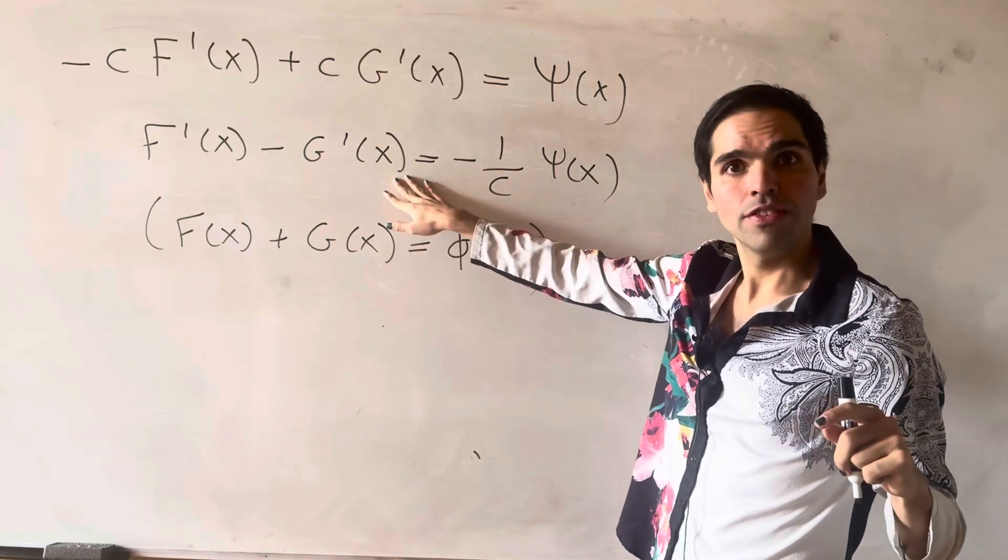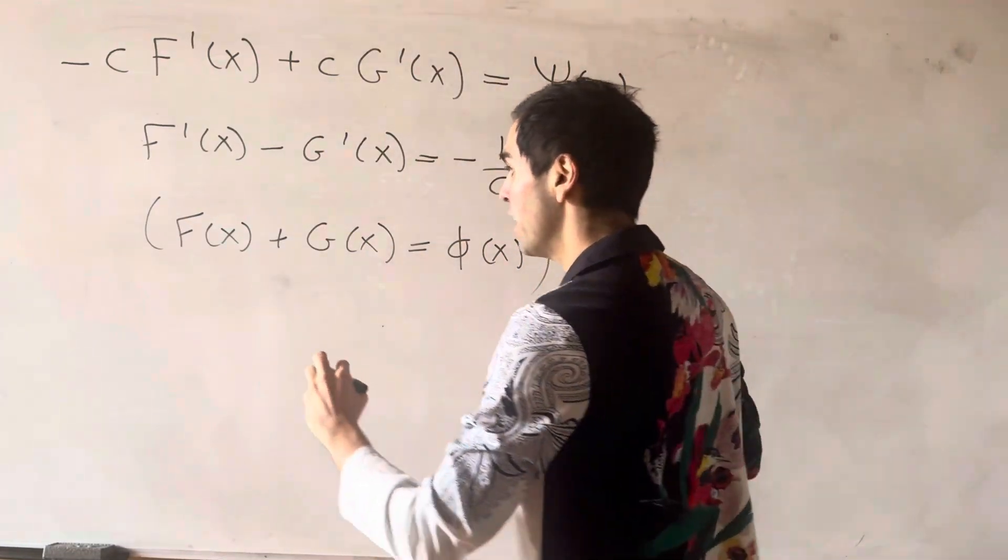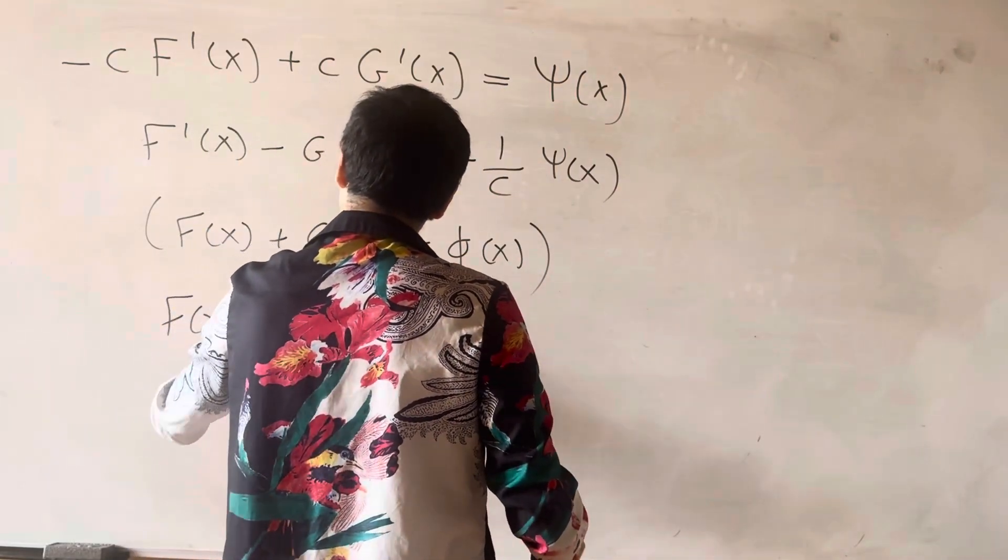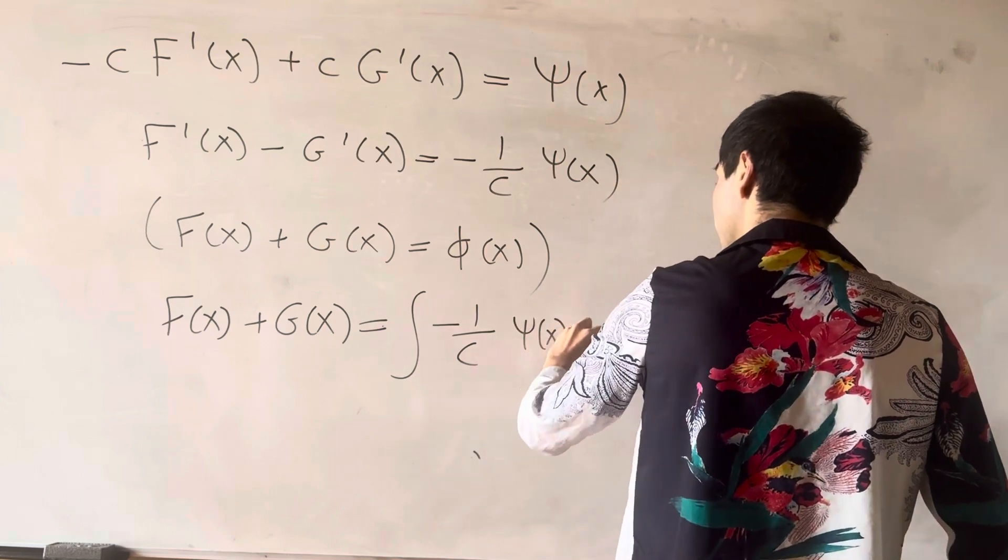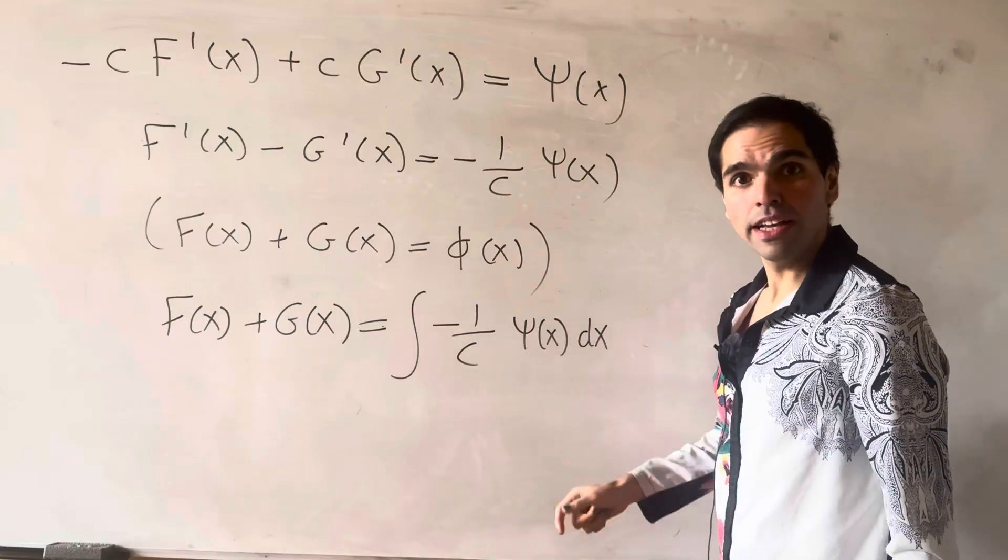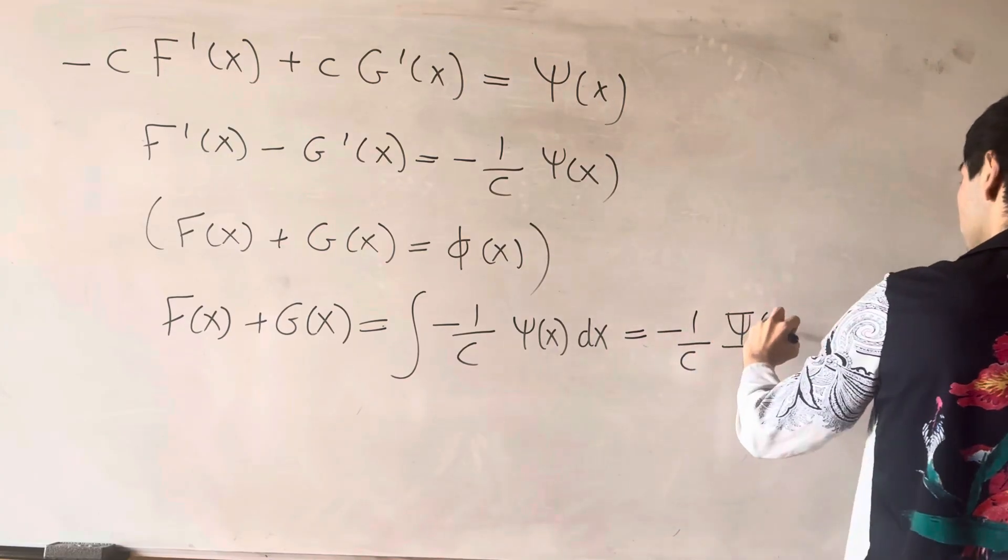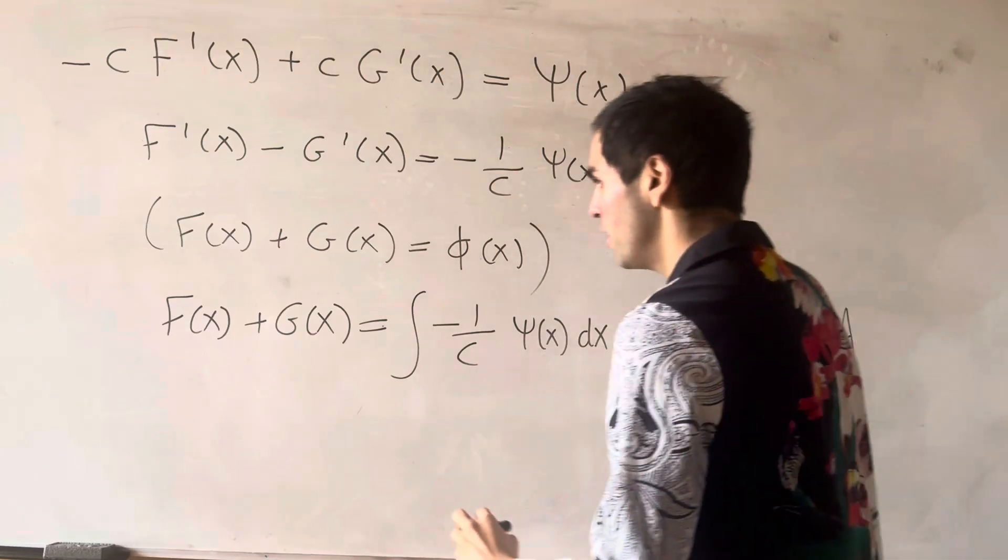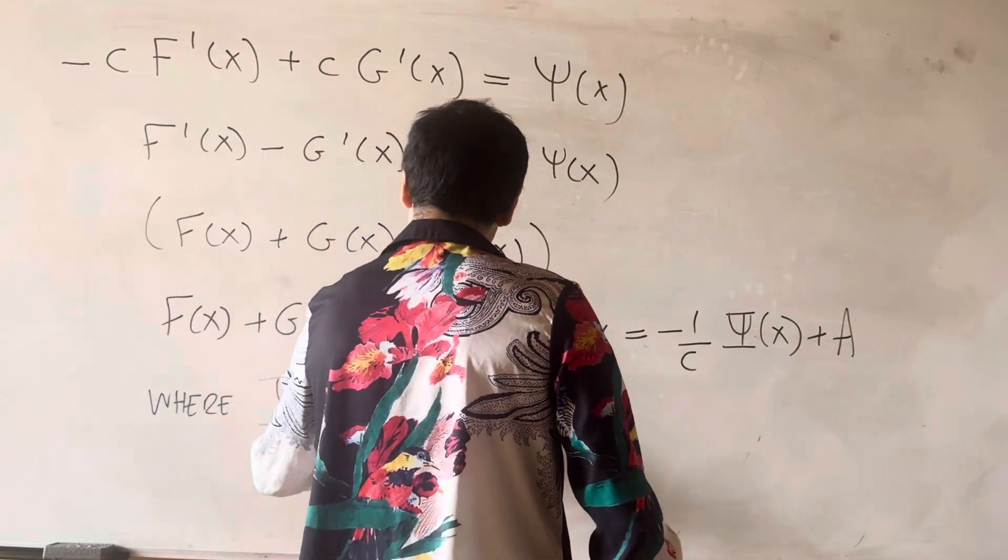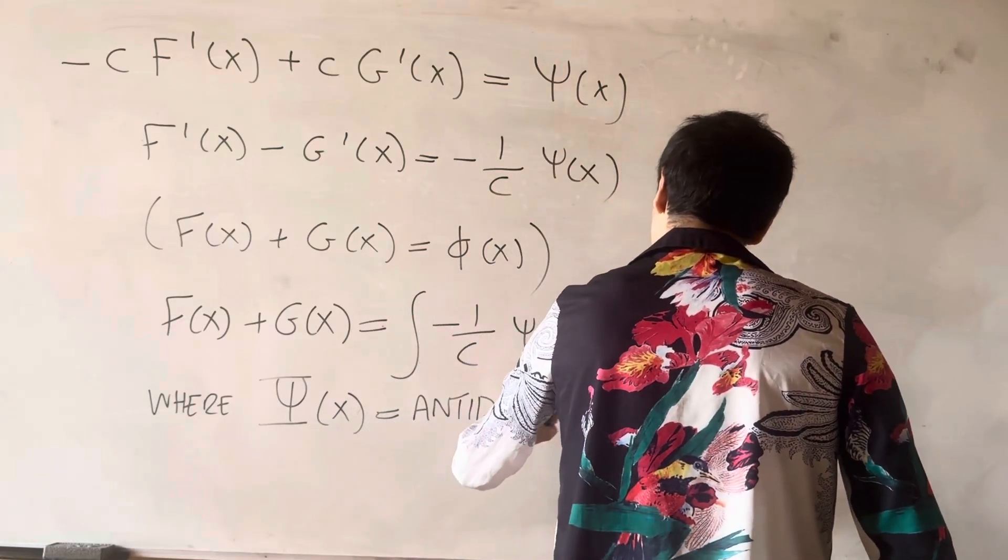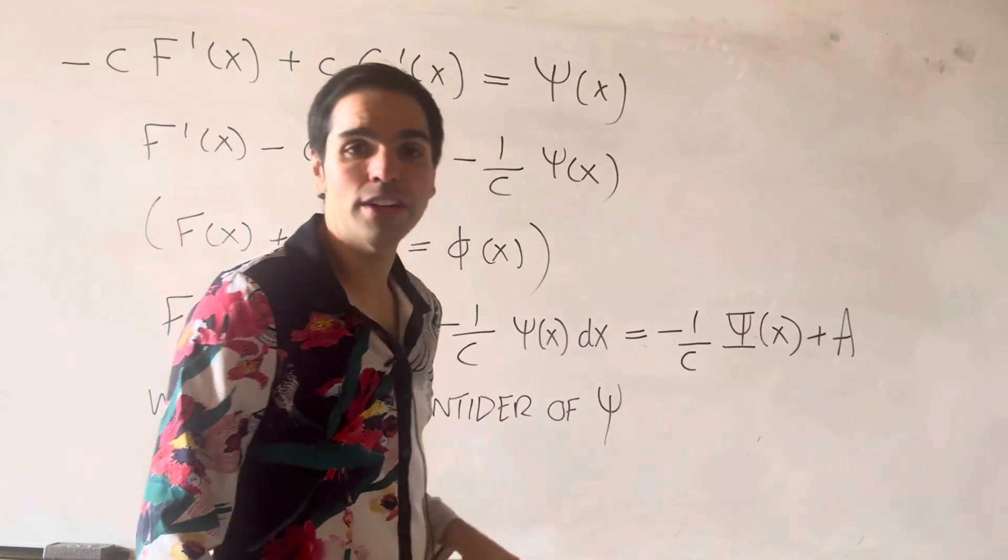So, to get rid of derivatives, we just integrate. And so, f prime minus g prime is minus one over c psi, which tells you f minus g is the integral of minus one over c psi of x dx, which we can rewrite in terms of the antiderivative. So, that's the same thing as minus one over c big Psi of x, plus some constant, let's call it a, where big Psi of x is an antiderivative of psi. And a is just an integration constant.